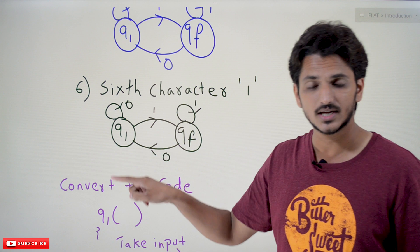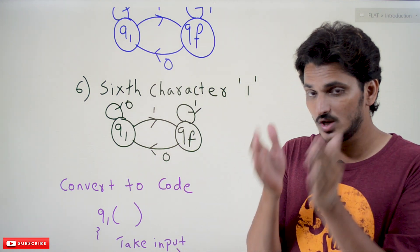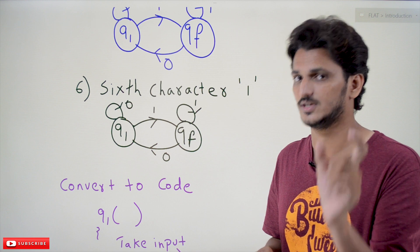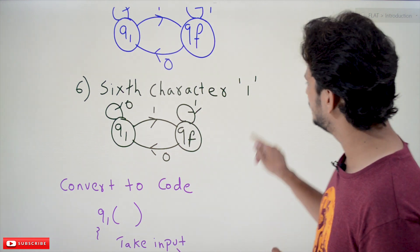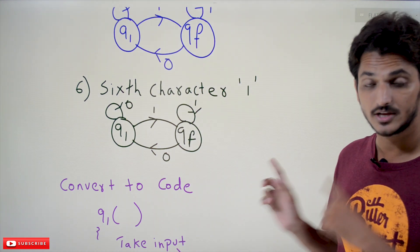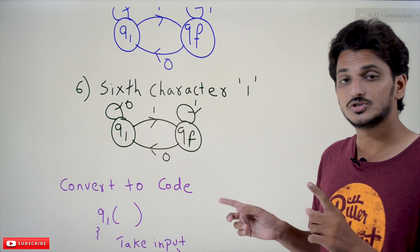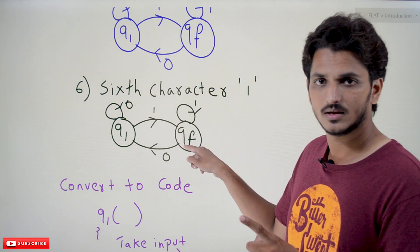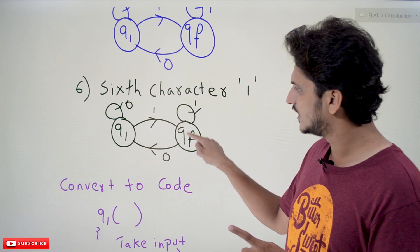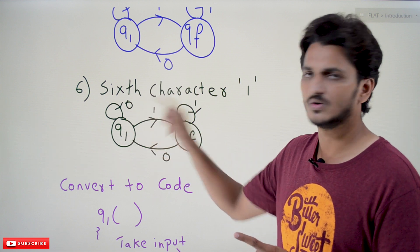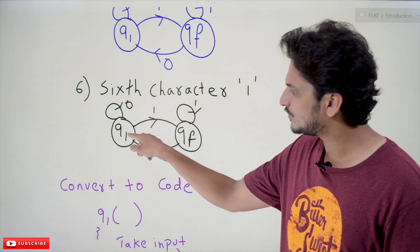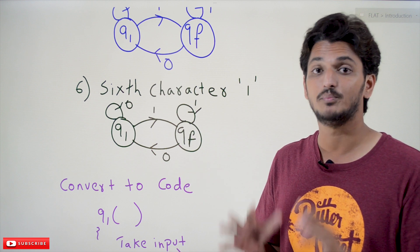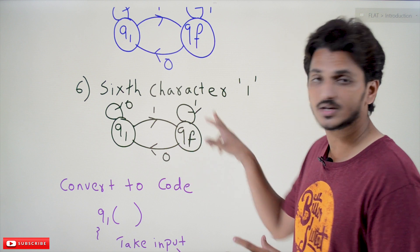An important point: when constructing the logic, you should not concentrate only on accepted strings — you must also verify the rejected strings. For example, '100' should not be accepted. Following our logic, '100' ends up on q1, not qf — so it is correctly rejected. You must check both conditions when constructing the logic.